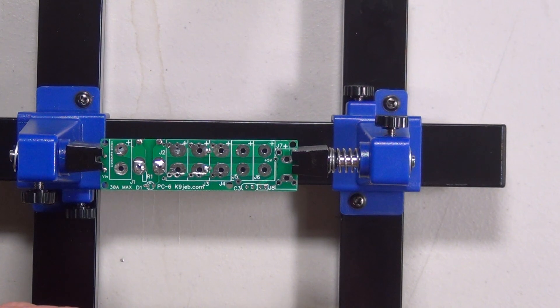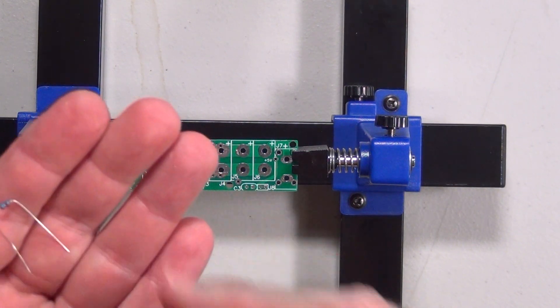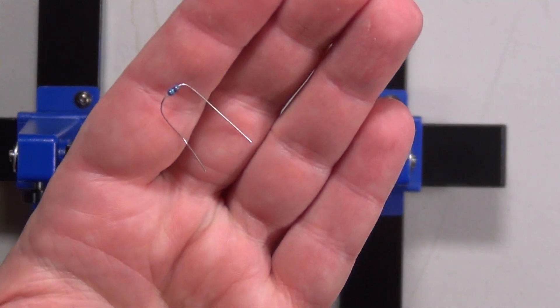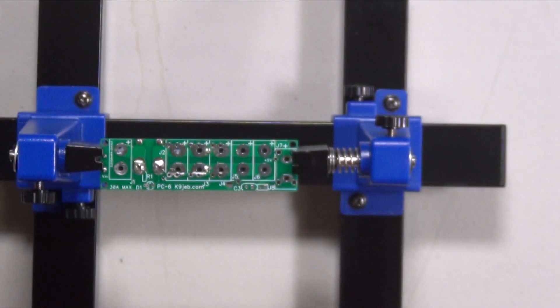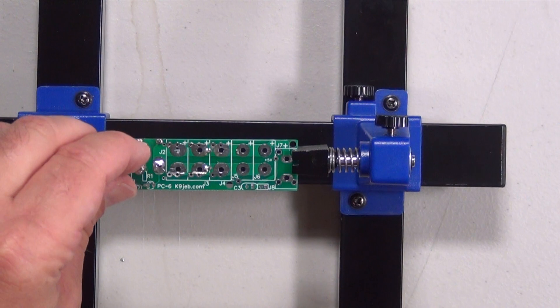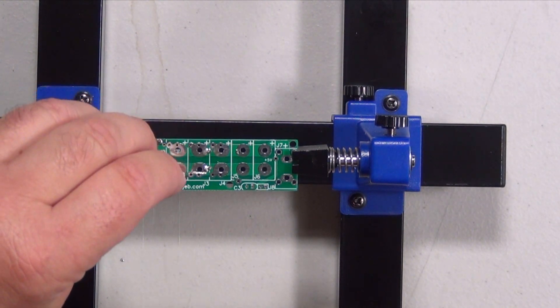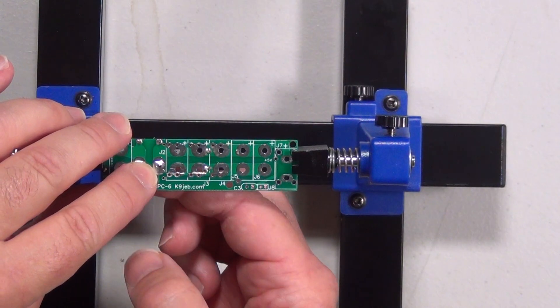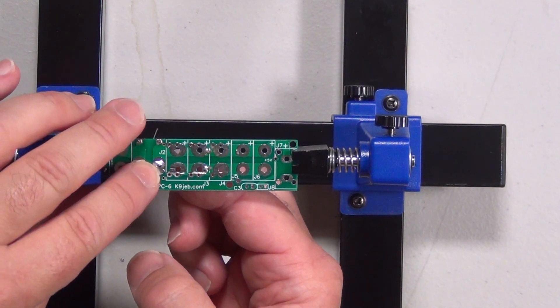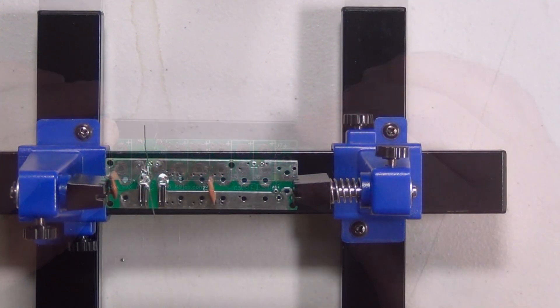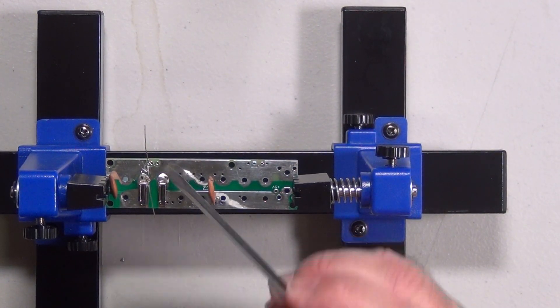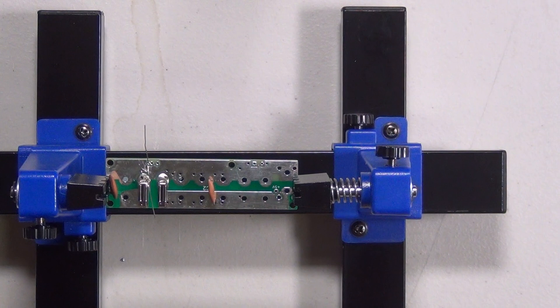We'll be putting in R1, which is a 10K resistor. Just get it down. Separate the legs so it'll hold it in place. Got to be careful not to fill in these other two holes over here. Because those are for the LED, if I remember correctly.